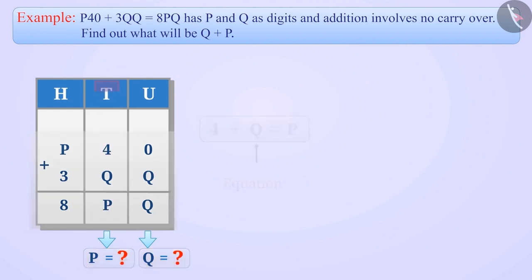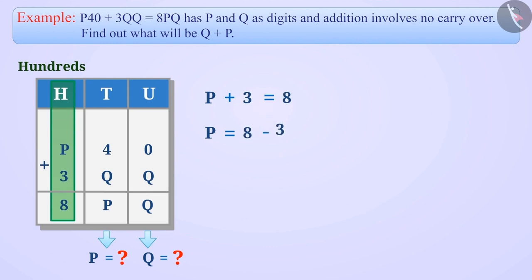Since no carry-over is taken in this addition, we can say that p plus 3 equals 8 by looking at the column in the hundreds place. From this, we can get the value of p: p equals 8 minus 3, which equals 5.